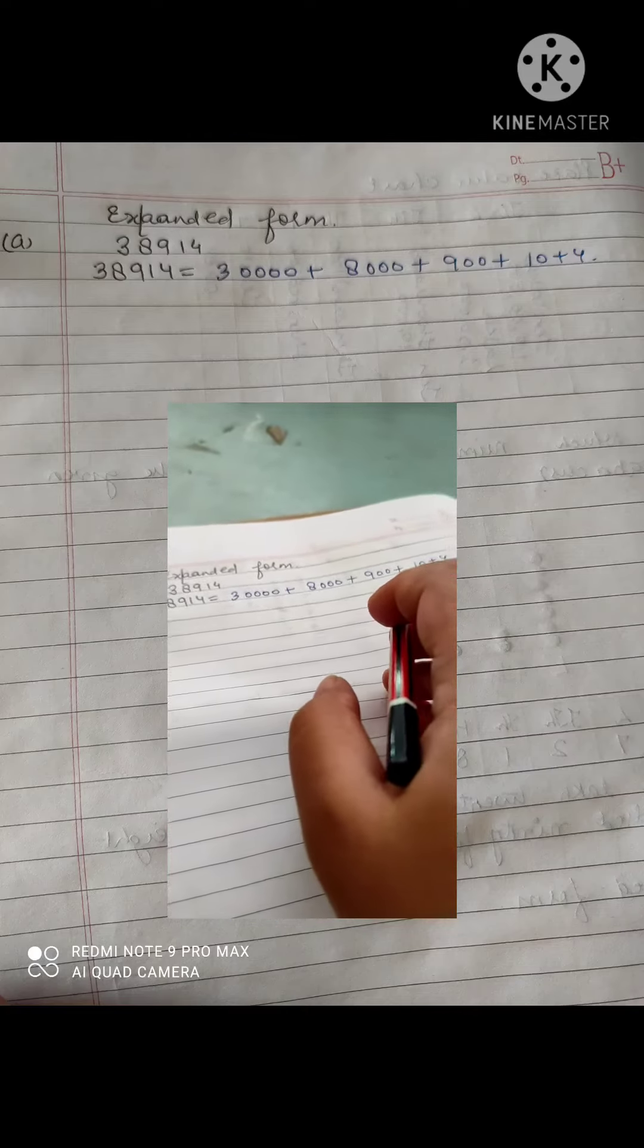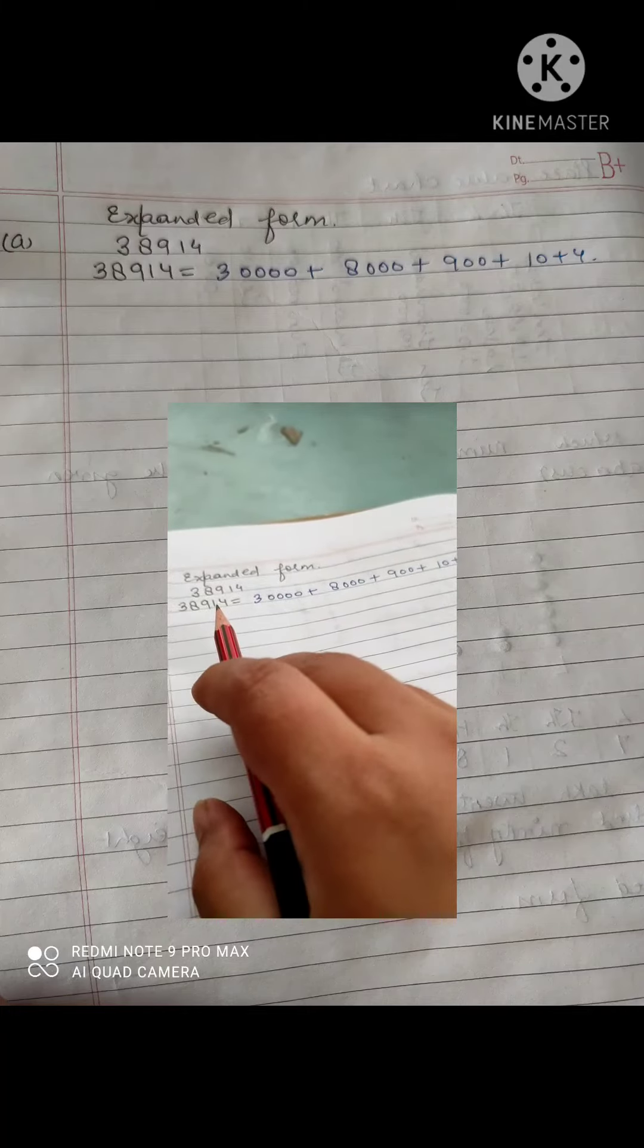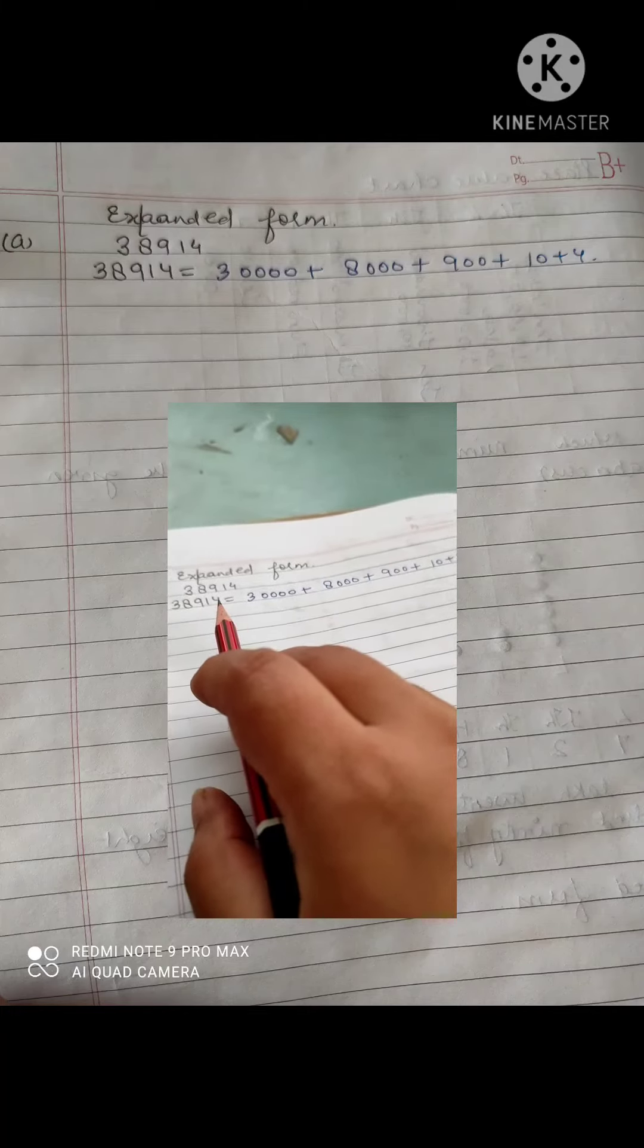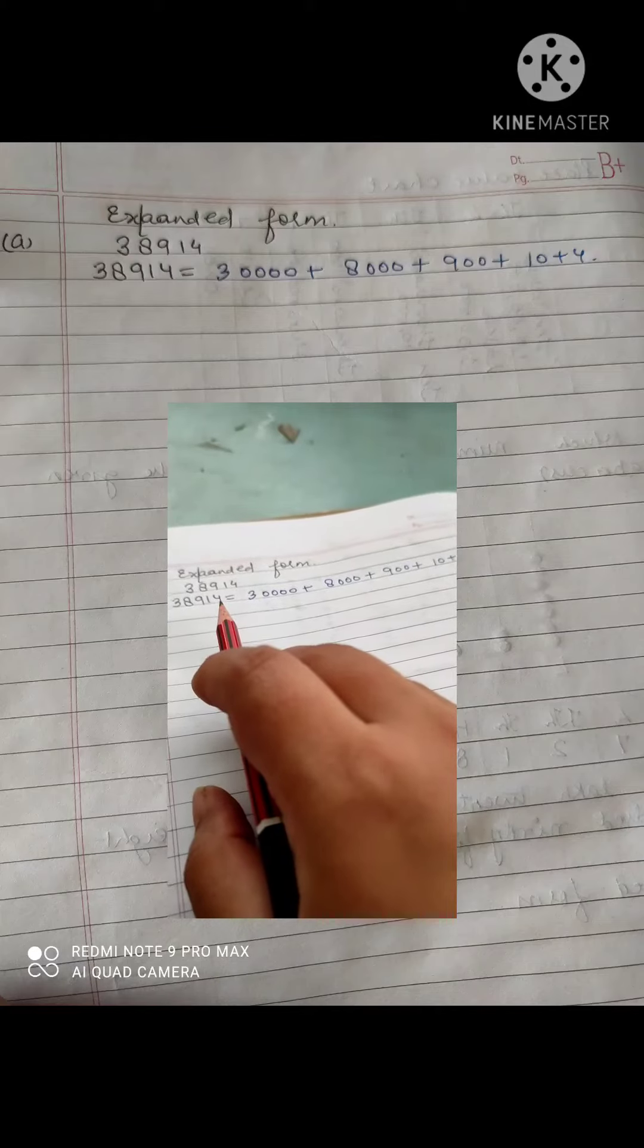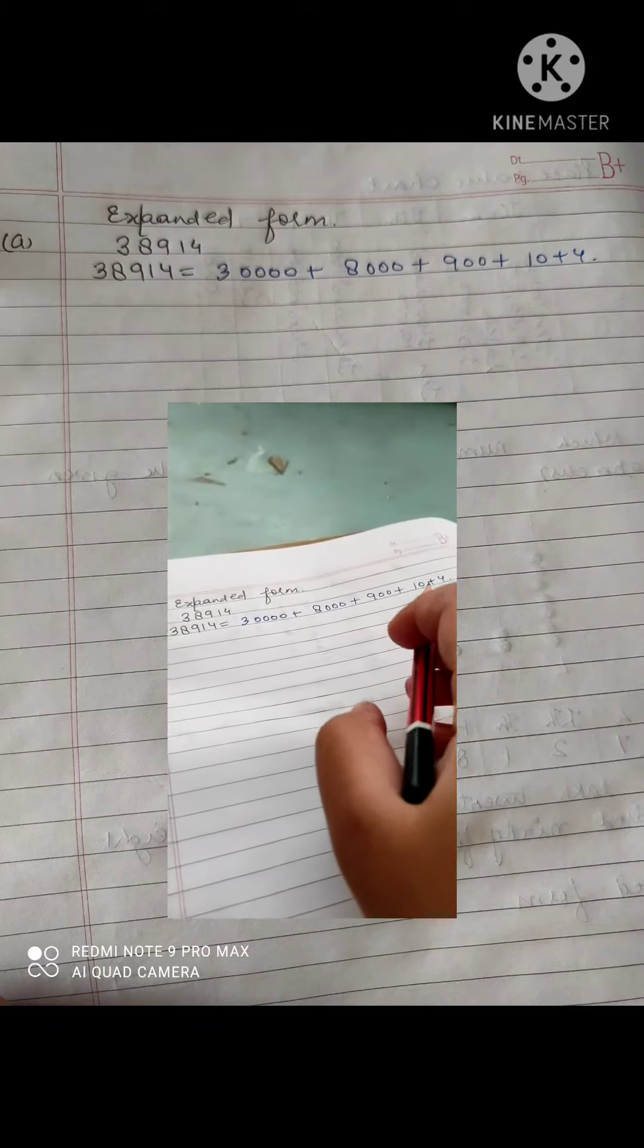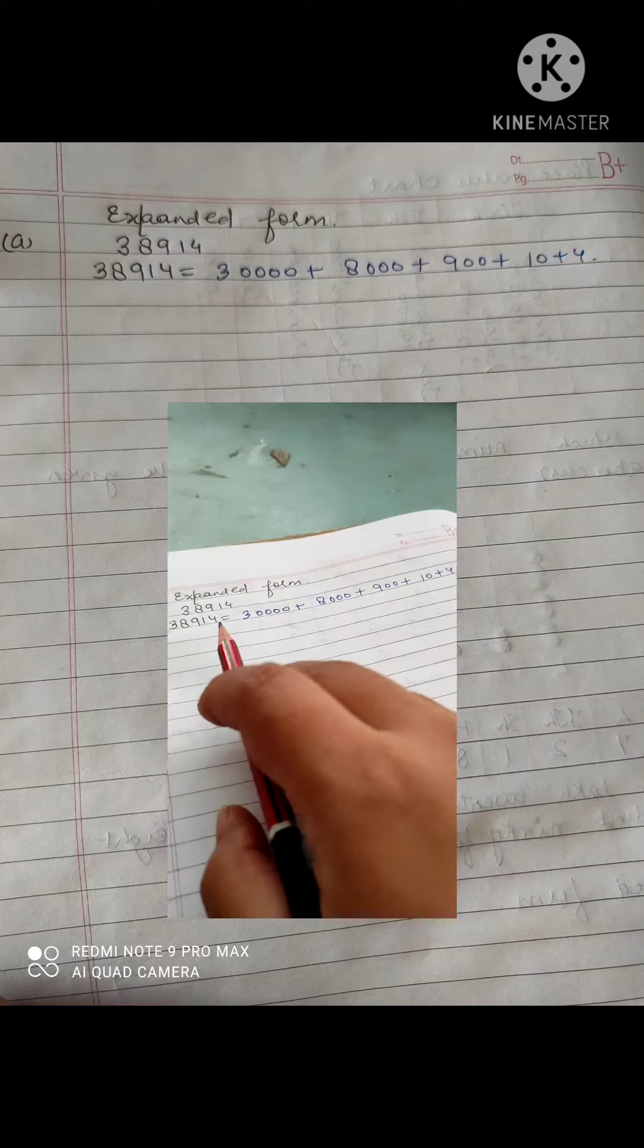Then you will put plus. And after that you will write 1. And you will count the digit after 1, that is 1. You will write 10, plus 4.